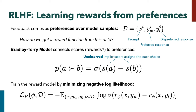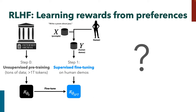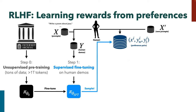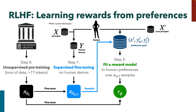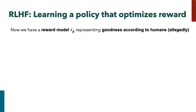Now we have a probabilistic model relating discrete binary choices to some scoring function. We can turn this into a loss function on a reward model and do maximum likelihood: replace the score s with our reward model r_phi, which has some parameters, and do maximum likelihood on our dataset of preference data. Out pops a reward model we can then optimize. This is essentially the human feedback part of RLHF.